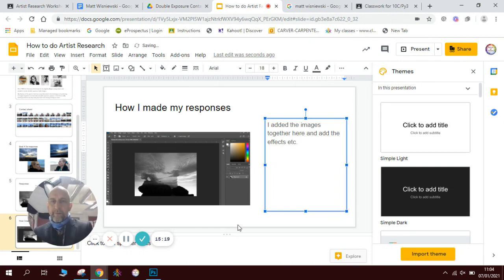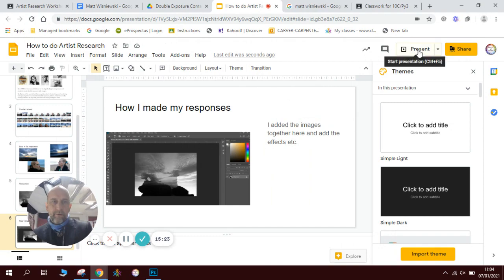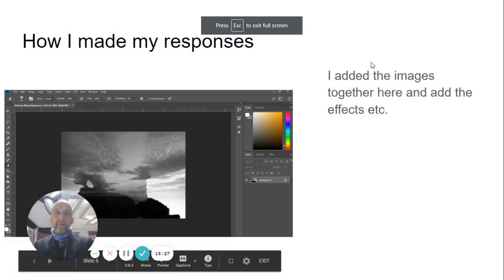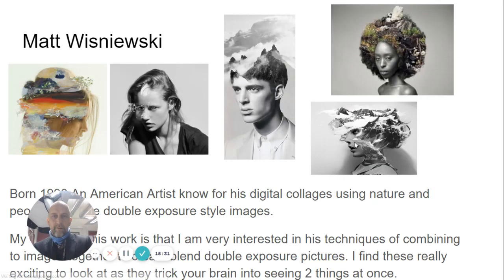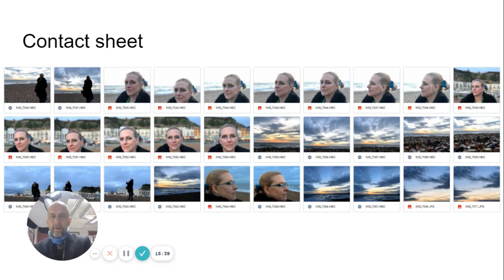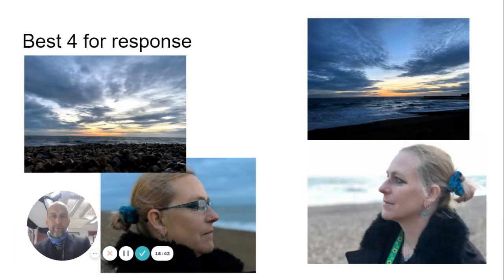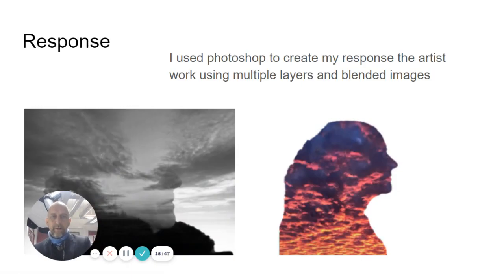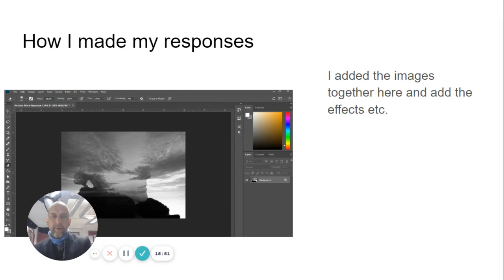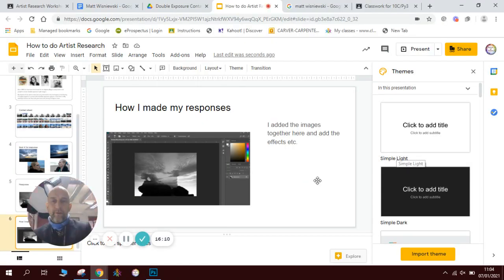Let me show you what we have so far for an artist research. I'll just come to present and talk you through where we're at. We are looking at the artist — there are some examples of his work and a little bit of information about it. There's our contact sheet of the photos we took to create a response. There's the best four for our response. There are two of our responses showing how we've done it, and this would be the example of how I made my response. Obviously I'm doing this as a video so I haven't got time to fill in all the details, but I can show you examples on the other videos I've saved. Hopefully that's given you a taste of how to do artist research and I look forward to seeing some examples that you do. Have fun with it.